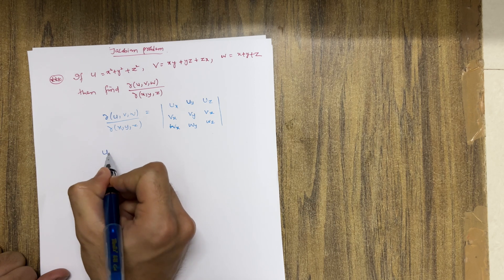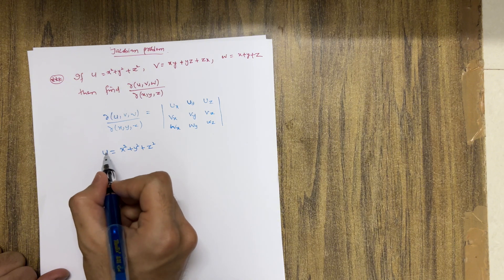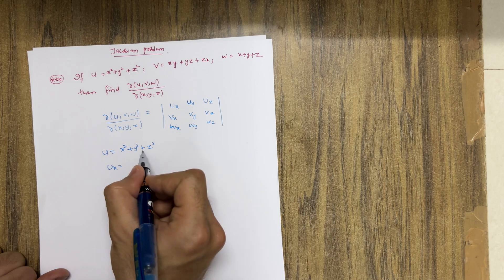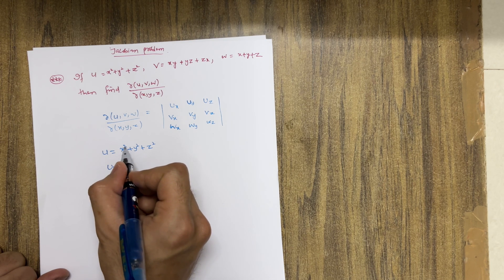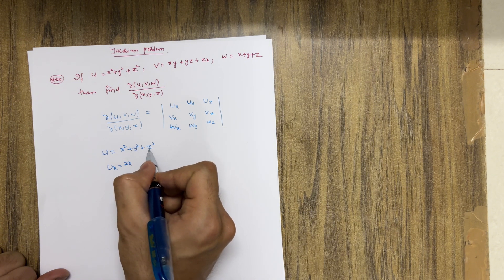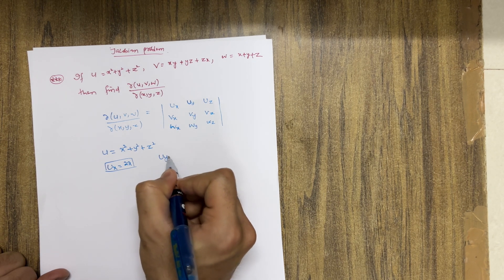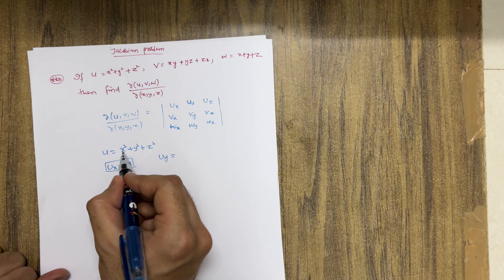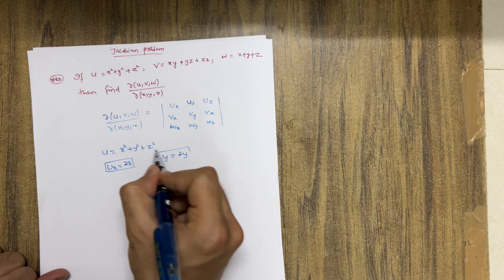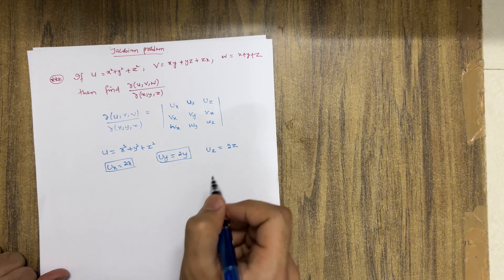We have u equal to x squared plus y squared plus z squared. We need to calculate ux, uy, and uz. Differentiating with respect to x: ux = 2x. Differentiating with respect to y: uy = 2y. And differentiating with respect to z: uz = 2z.